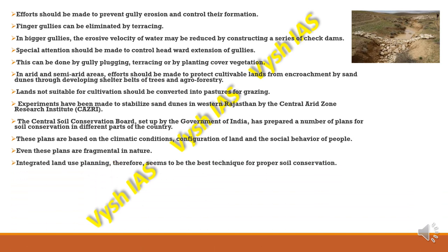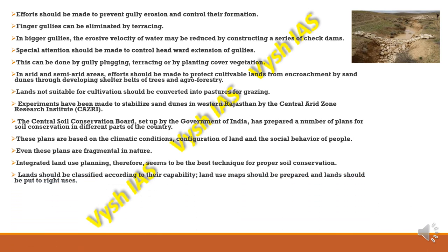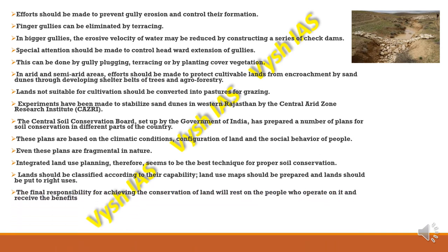Integrated land use planning is the best technique for proper soil conservation. Land should be classified according to its capability — how much crops it can grow, how much fertilizer it can bear, and the pressure that can be exerted on the soil. Land use maps should be prepared and land should be put to the right uses. The final responsibility for achieving conservation rests upon the people who operate the land and benefit from it — individuals must also contribute from their side.